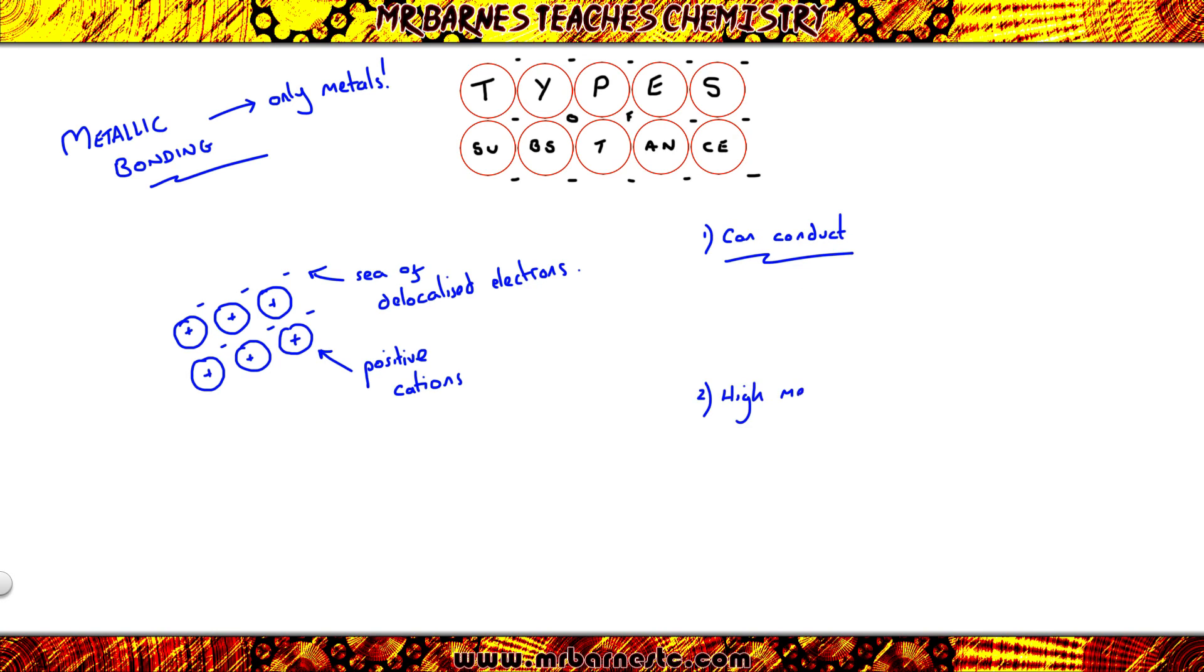This helps to explain the three major properties you need to know. Why can they conduct? Why do they have high melting points? And why are they malleable? So if we start off, why can they conduct electricity? This one's fairly obvious.